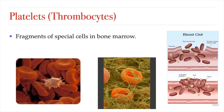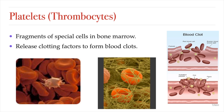Platelets, or thrombocytes, are not actually whole cells. They are fragments of special cells that are found in the bone marrow. Platelets play a role in wound healing. Their primary function is to prevent and stop bleeding. If a blood vessel is damaged, the body sends signals to platelets which cause them to travel to the injured area. Once the platelets arrive at the site, they clump together and release clotting factors to help form a blood clot that will help stop bleeding.